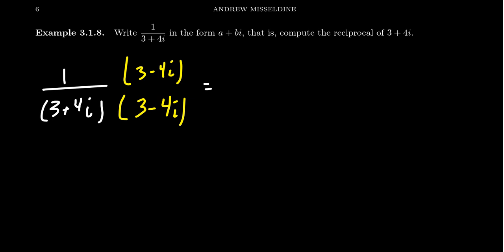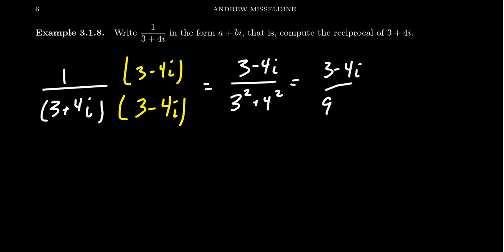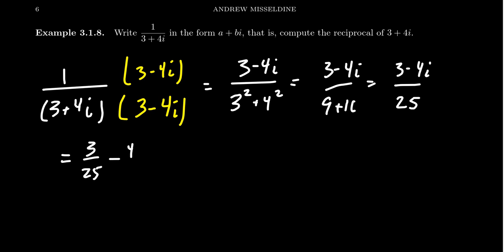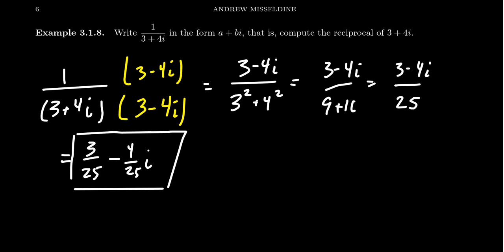Multiplying top and bottom by 3 minus 4i: one times anything is just that number, so the numerator gives us 3 minus 4i. In the denominator, since you're multiplying a complex number by its conjugate, you get the real part squared plus the imaginary part squared — 3 squared plus 4 squared, which is 9 plus 16, equaling 25. So we get 3 minus 4i over 25, which we can break up as 3 over 25 minus 4 over 25 i.